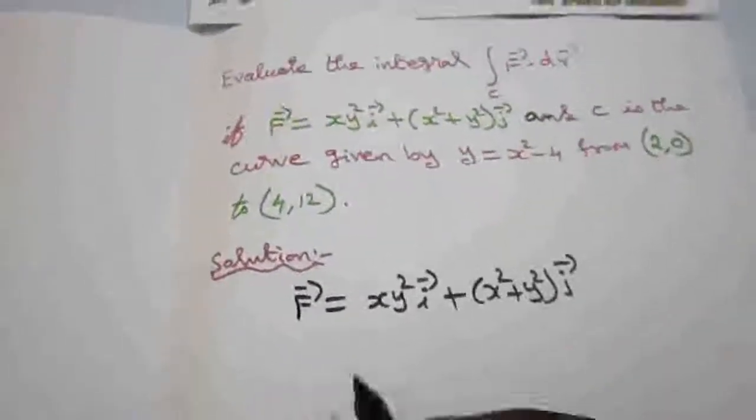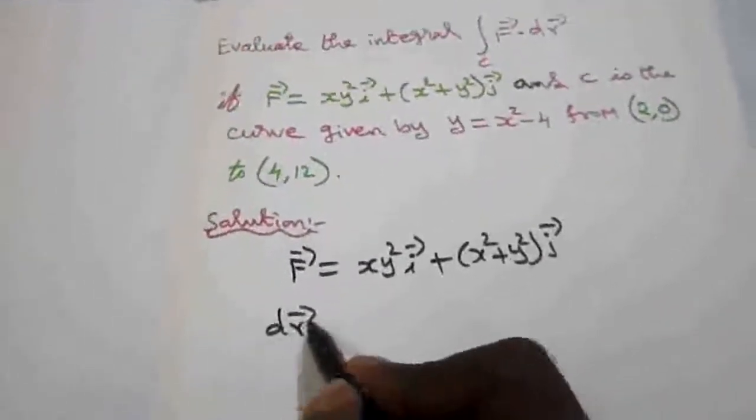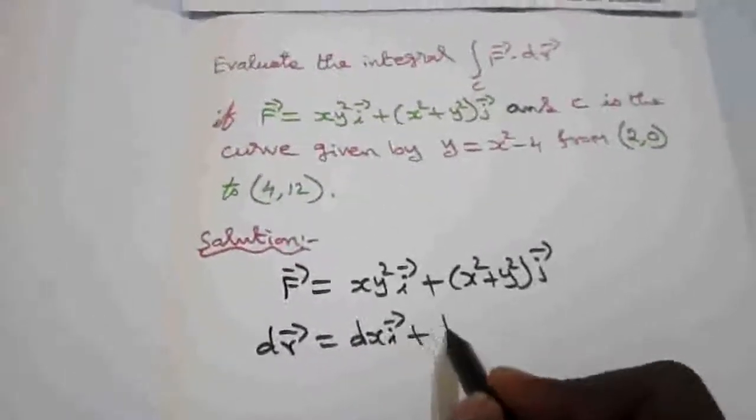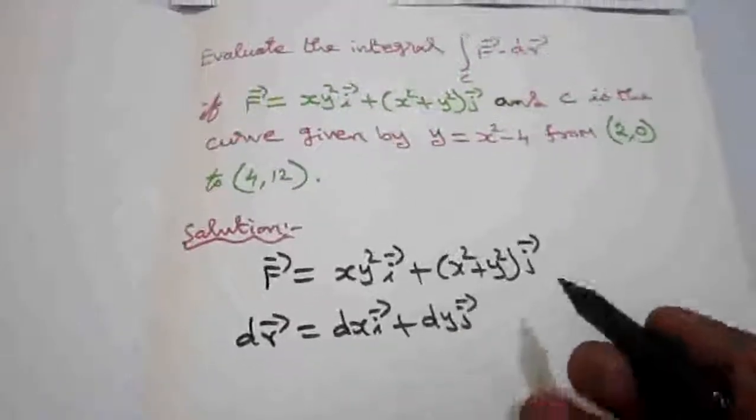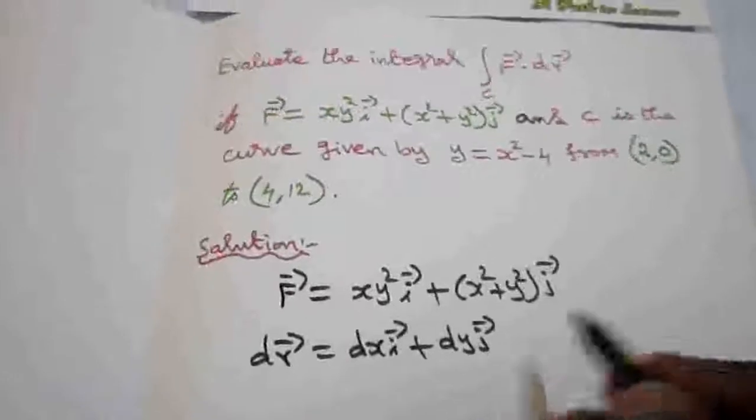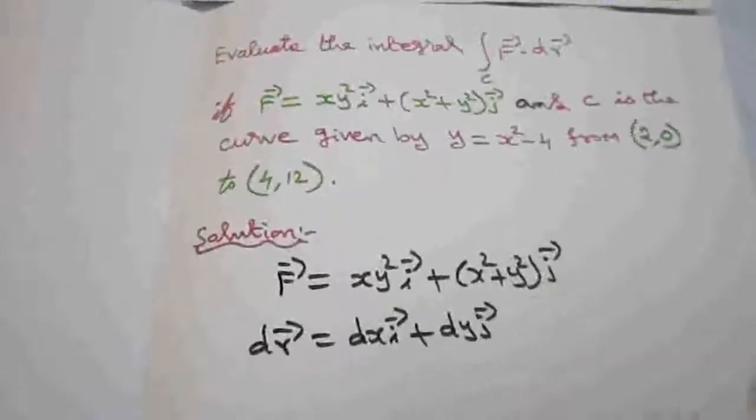And we know dr vector. Dr vector is always dx i vector plus dy j vector. We don't want dz, or if we can write, when you take dot, it will become 0. So it is two-dimensional. We don't want to take dz.